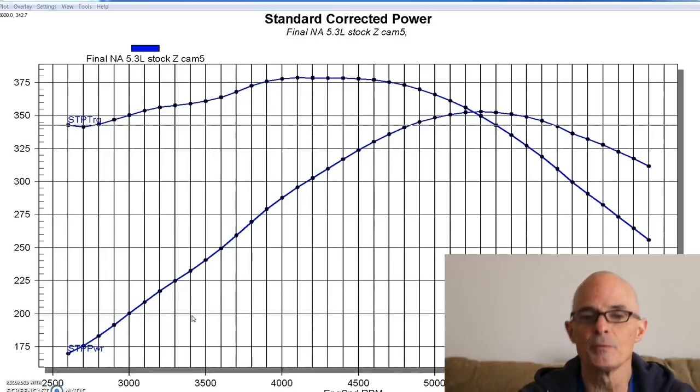It gives you a basis to take a look at something and say, hey look, it should kind of be doing this, but yet it's doing this over here. So why is that? It gives you a direction you can take a look at. But on this particular combination, this was a 5.3.